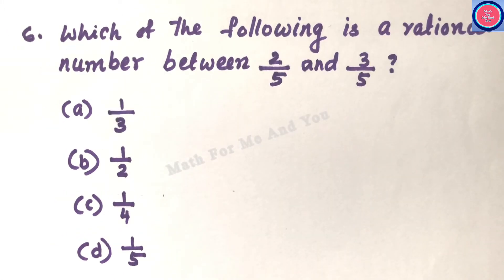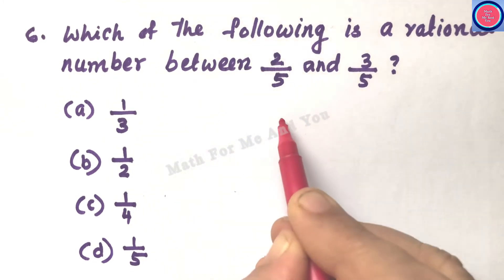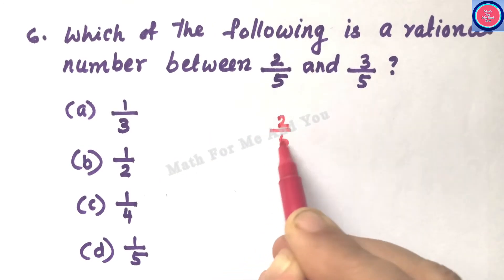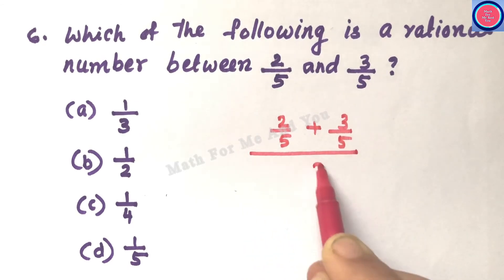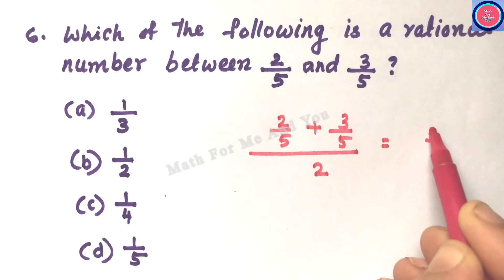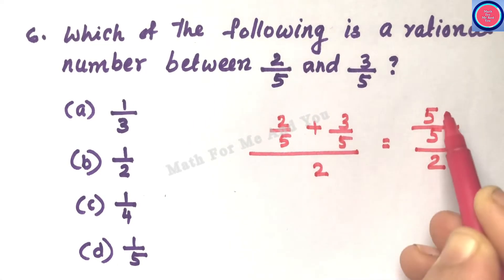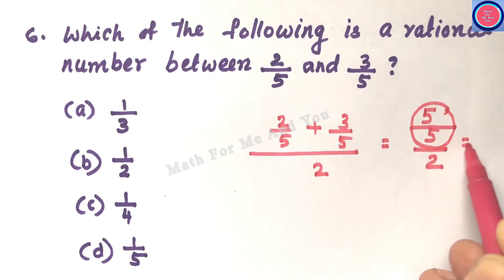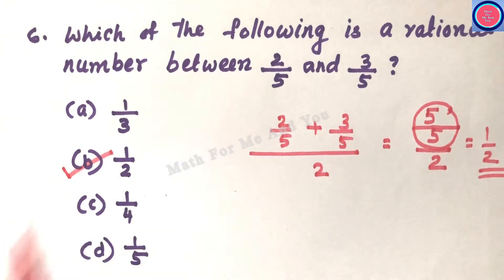Q6: Which of the following is a rational number between 2/5 and 3/5? To find one rational number between two rational numbers, add them and divide by 2. (2/5 + 3/5) ÷ 2 = (5/5) ÷ 2 = 1 ÷ 2 = 1/2. So the number in between is 1/2 — that is option B.